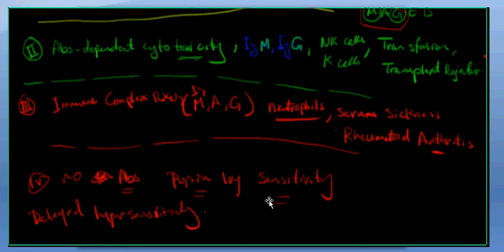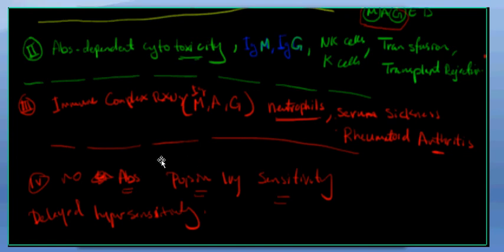Number four is delayed hypersensitivity, which is associated with poison ivy sensitivity. If you come across the plant poison ivy, it has certain chemicals that if you touch your skin you can become very sensitive. This is called delayed sensitivity. However, it does not involve any antibodies, so we don't have to worry about antibodies in this situation.